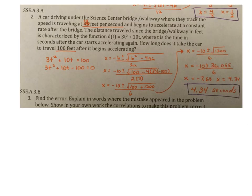Number two, a car driving under the Science Center bridge walkway where they track the speed is traveling at 10 feet per second and begins to accelerate at a constant rate after the bridge. And yeah, I had to mark out 45 because it didn't make sense with the equation I gave you. The distance traveled since the bridge walkway in feet is characterized by the function d of t equals 3t squared plus 10t, where t is the time in seconds after the car starts accelerating again. How long does it take the car to travel 100 feet after it begins accelerating?